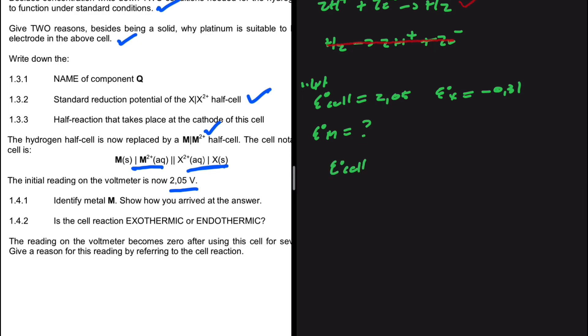So what can we say now? The EMF of our cell is equal to the reduction potential at the cathode minus the reduction potential at the anode. So the reduction potential of the cell, 2.05, equals the potential at the cathode. At the cathode, we have X. So that is going to be minus 0.31 minus the reduction potential at the anode. So we take minus 0.31 to the left-hand side. We're going to have 2.36 being equals to minus the potential at the anode.